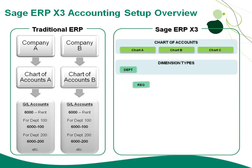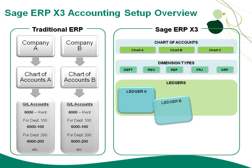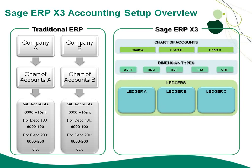We can set up dimensions for whatever cost centers or analytical information we want to track — for example, a department, a region, a sales rep, perhaps projects, and perhaps sales groups. After we do that, we would define ledgers.